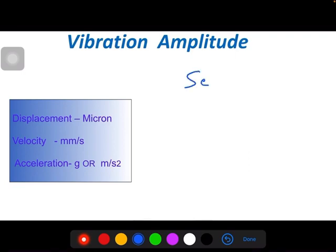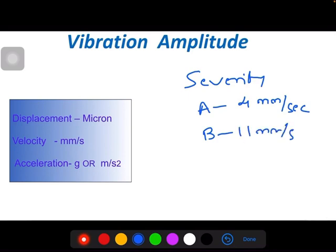Severity means if you consider two machines A and B - A runs at around 4 mm per second vibration and B runs about 11 mm per second vibration - then B is more severe than A. So we cannot run machine B unless it is rectified.